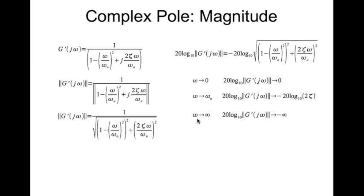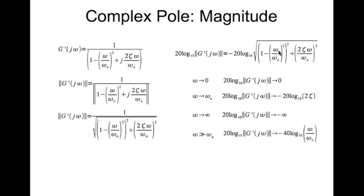Finally, when ω tends to infinity, the whole expression tends to minus infinity. When ω is very much greater than ωₙ, you can neglect 1 with respect to the dominant terms, and you end up getting minus 40 log base 10 of ω divided by ωₙ.